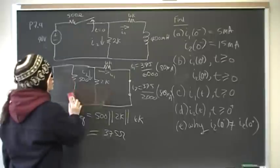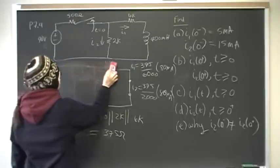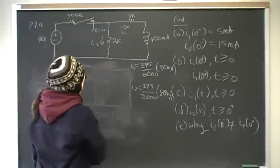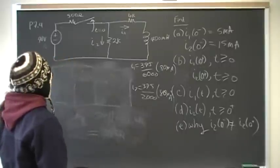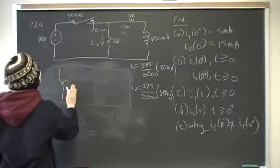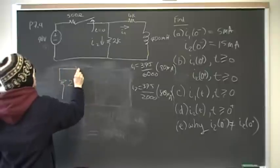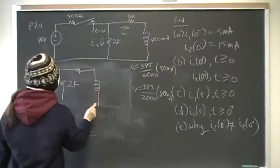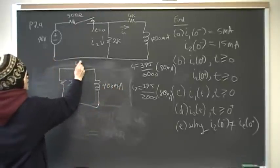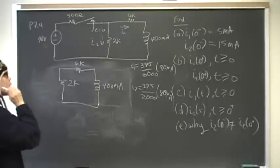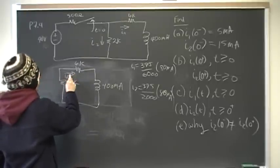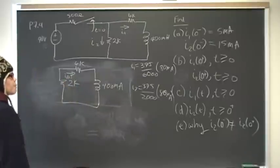Now that we have the branch currents before time zero — when the switch is still closed — we want to know what happens right after the switch opens. When the switch opens, the voltage source is gone. We have the 2k and 6k resistors, and the inductor is no longer a short circuit. So we have 6k here.